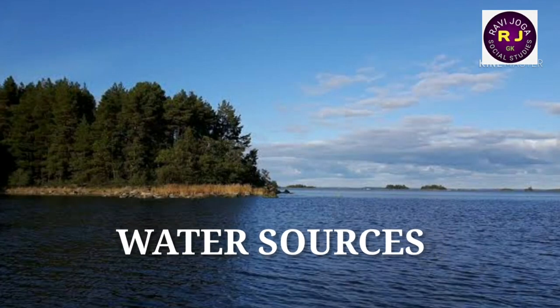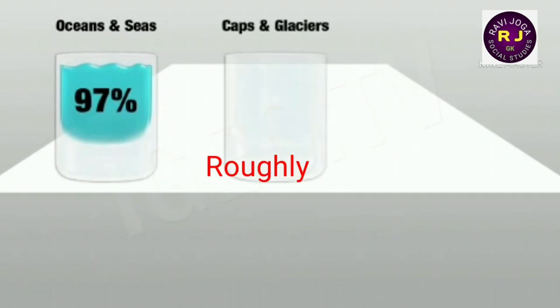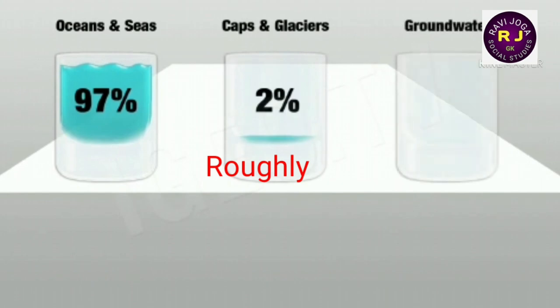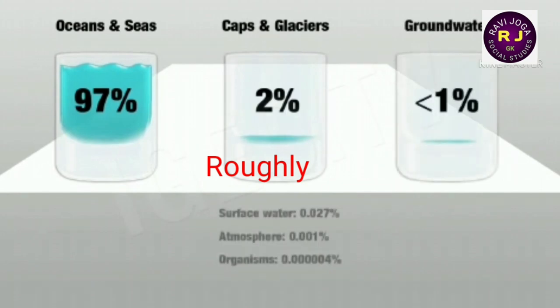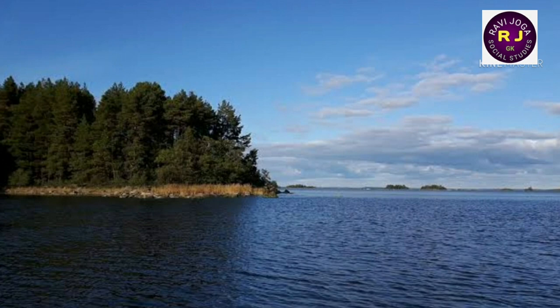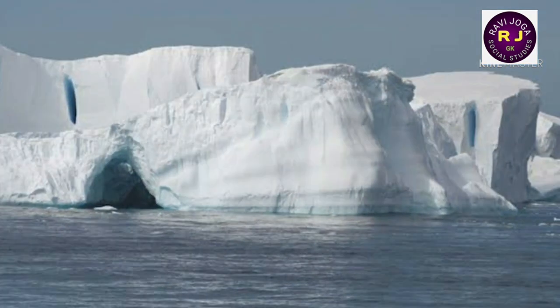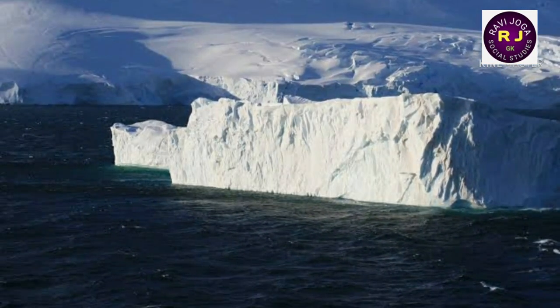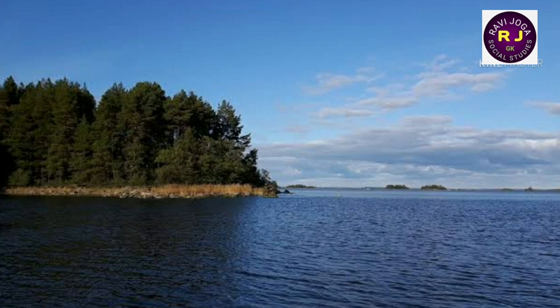Out of the total water present on the earth's surface, 97.2% is saline ocean water. Only 2.78% is fresh water, and a large amount of that fresh water is in the form of ice and snow covering Antarctica, the Arctic and mountain regions. Only 30.1% of fresh water is fresh groundwater. Just 0.34% of the total fresh water on earth, found in lakes, reservoirs and river systems, is accessible for our needs.